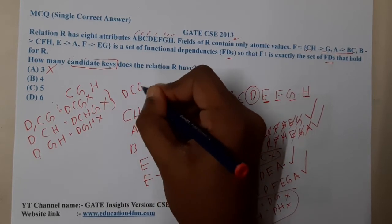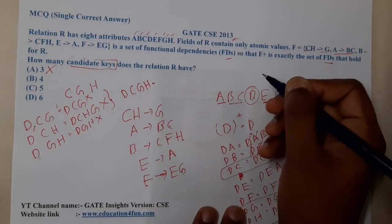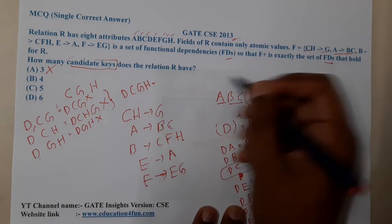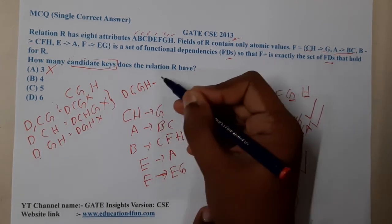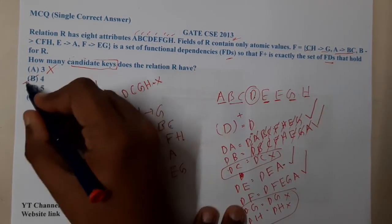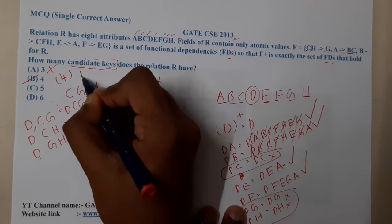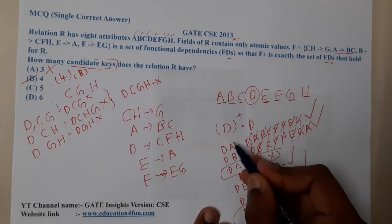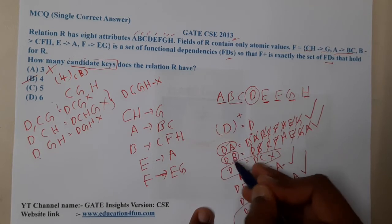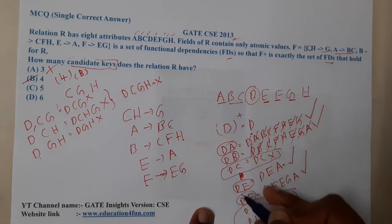I think we should make four-pair. DCGH: from CH, I can get AG, but that's it. The only pairs are four. The candidate keys - that is, option B is the correct answer. AD, DB, DE, DF - these are the four different candidate keys which are possible.